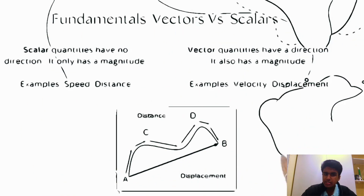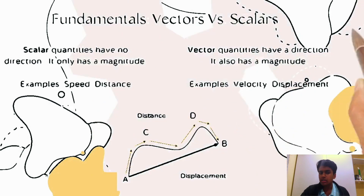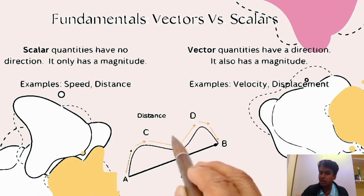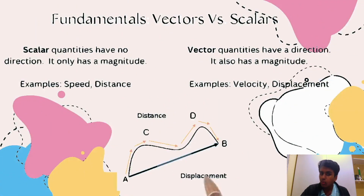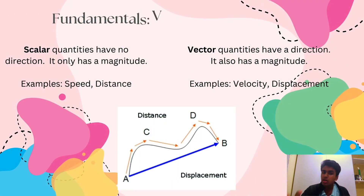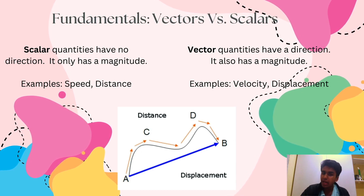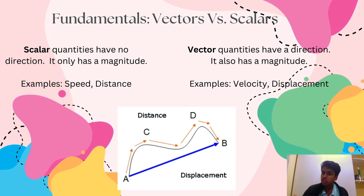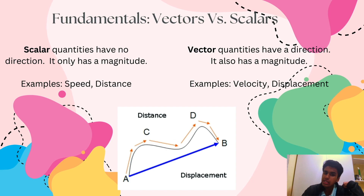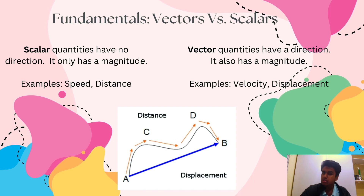Our fundamentals: a scalar versus a vector quantity. A scalar quantity has no direction but only has a magnitude, while a vector has both a direction and a magnitude. Examples of scalar quantities include speed and distance, and vector quantities include velocity and displacement.